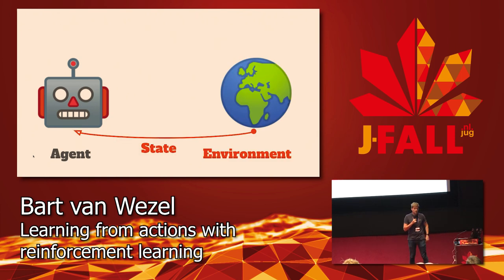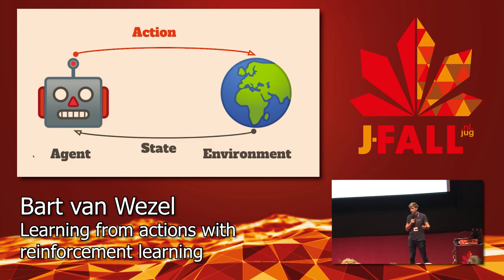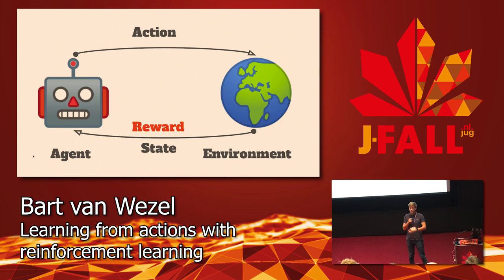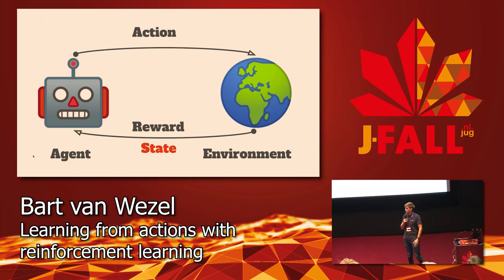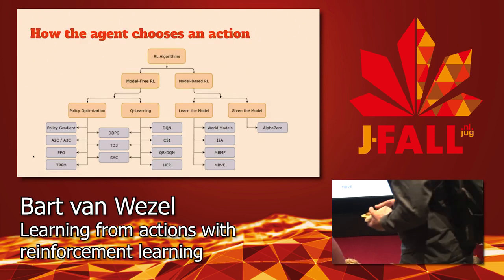The agent needs to know something about the environment, so we map the current state of the environment to the agent so it can make a decision. Based on the current state, the agent chooses one action from all the possible actions provided — it cannot make up new ones. After the agent chooses an action, something positive or negative happens in the environment, and we map that back to the agent as a reward. Not all actions trigger a reward, but each action produces a new state.